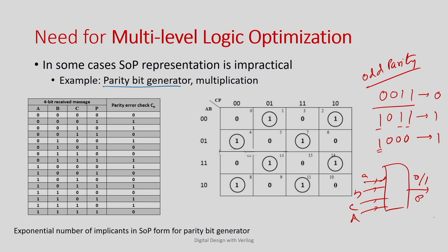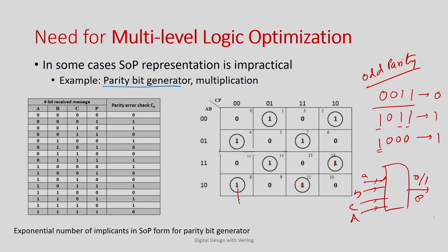If you put this function into a Karnaugh map for 4 inputs, the ones correspond to cases where the number of 1s in the input is odd. When you try to apply Karnaugh map minimization, you find that none of the 1s can be grouped together — there are no consecutive locations that can be clubbed. So each of the 8 minterms requires 4 literals, giving 8 × 4 = 32 literals in the minimal two-level expression. Assuming 1 literal corresponds to 2 transistors, that's roughly 64 transistors.